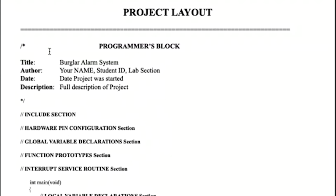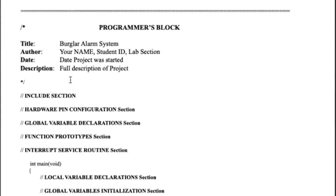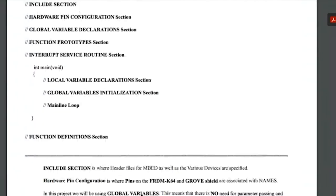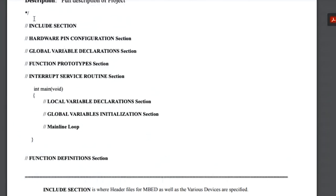This is your project layout. The title is going to be Burglar Alarm System. You're going to have a programmer's block with a title, author (your name), student ID, lab section, date the project was started, and a full description. Above the main, you'll have include files — the header files for embed as well as the various devices, since the LCD has its own header file. You'll also have a hardware pin configuration section where you specify where your LCD and four-digit display are connected.